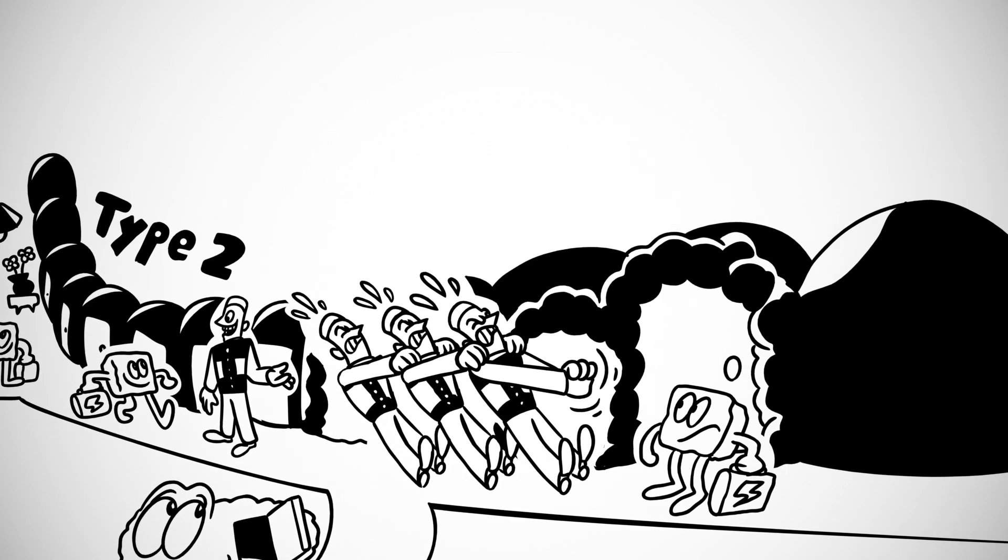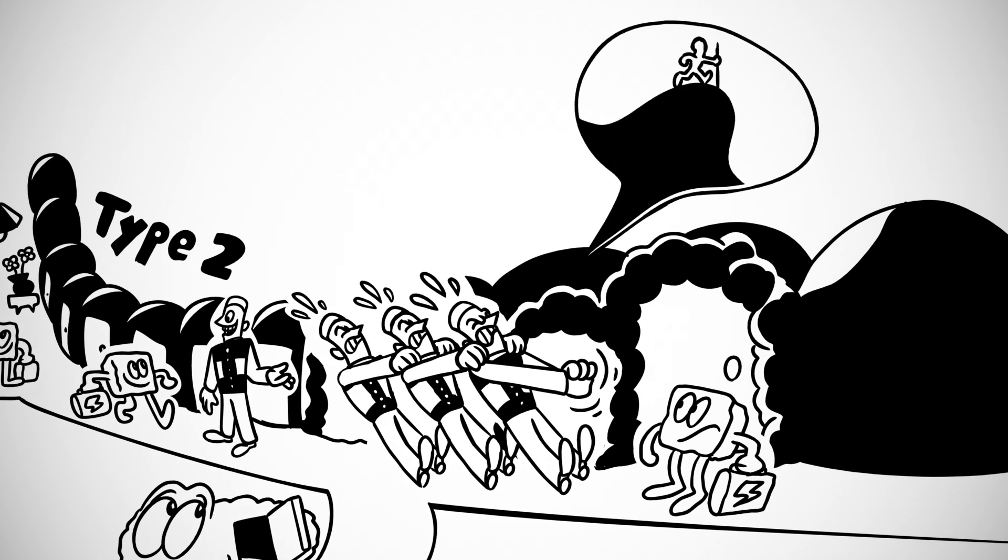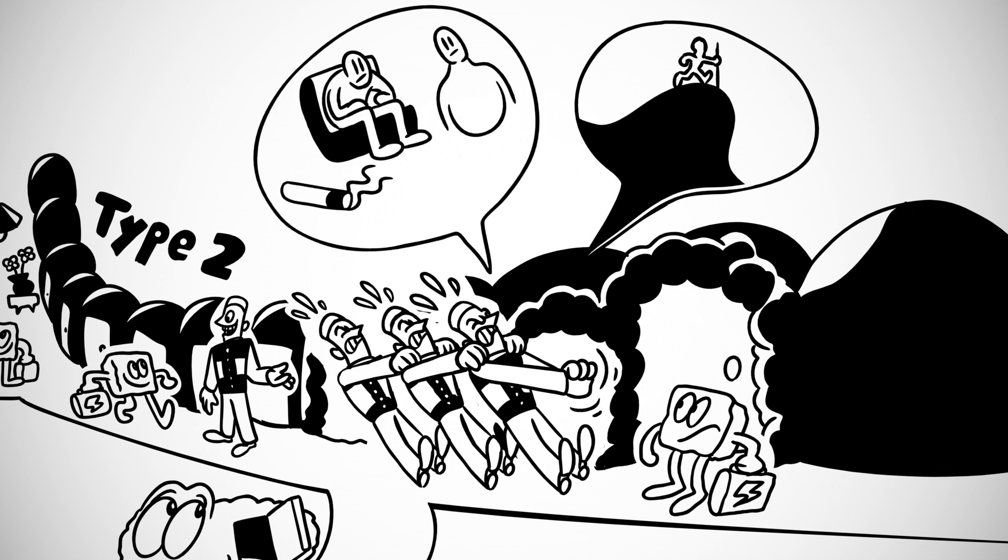Type 2 diabetes happens as the doors get harder to open gradually over decades, with a diagnosis typically made in middle age. Obesity, inactivity, smoking, and having a relative with the condition all cause the doors to become stuck more easily.